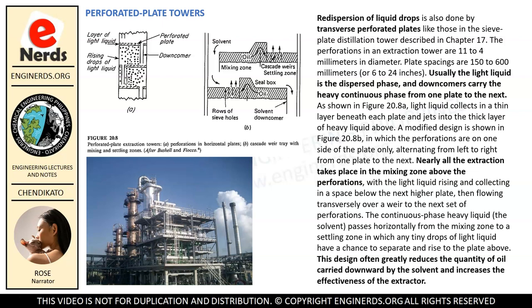Nearly all the extraction takes place in the mixing zone above the perforations, with the light liquid rising and collecting in a space below the next higher plate, then flowing transversely over a weir to the next set of perforations. The continuous phase — heavy liquid, the solvent — passes horizontally from the mixing zone to a settling zone in which any tiny drops of light liquid have a chance to separate and rise to the plate above. This design often greatly reduces the quantity of oil carried downward by the solvent and increases the effectiveness of the extractor.